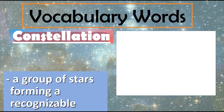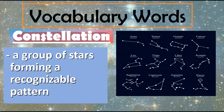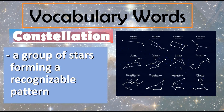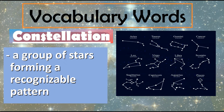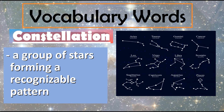Constellation is a group of stars forming a recognizable pattern. We have what we call a zodiac sign. For example, my birthday is on August 14, so my zodiac sign is Leo.